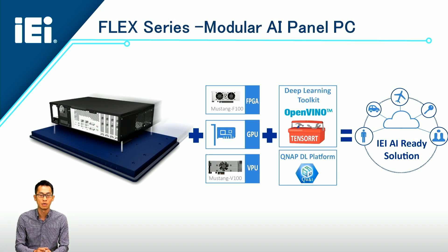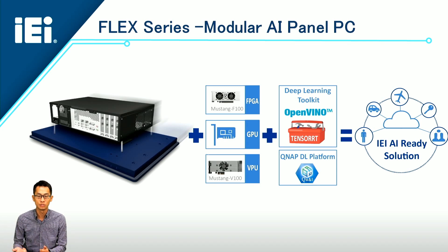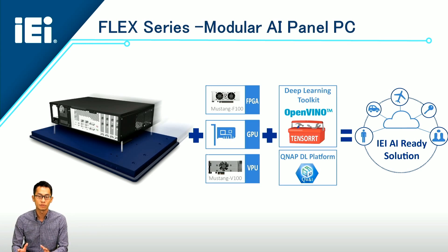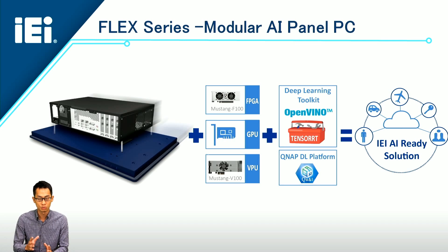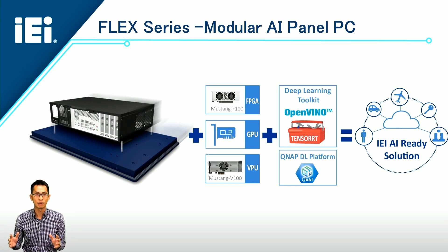It consists of two parts: one is a 2U box PC together with a panel kit. On top of that, there are several add-on cards you can choose from — you can choose an FPGA, GPU card, or VPU card to empower your computing density for AI. We also have the Intel OpenVINO toolkit, which is an easy-to-use SDK for system development, and the QNAP DL platform, which is an ideal SDK platform for development.